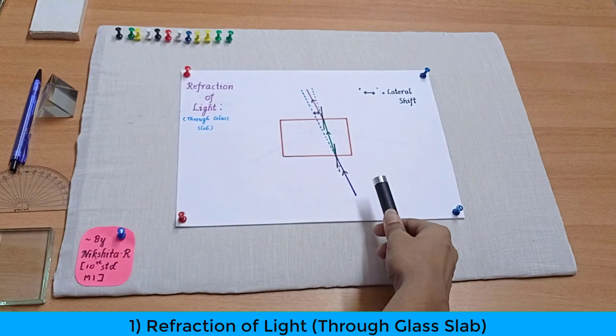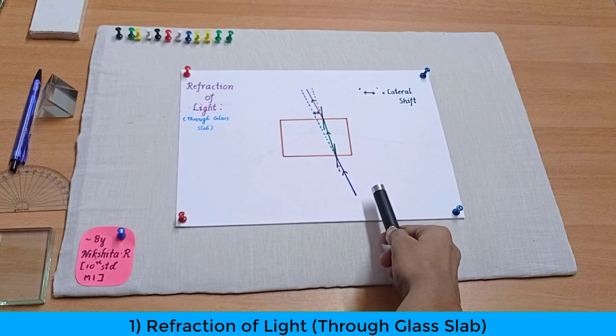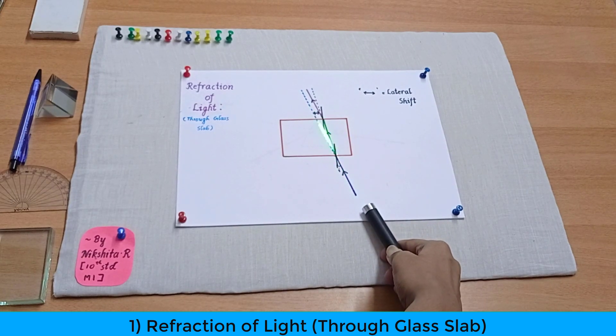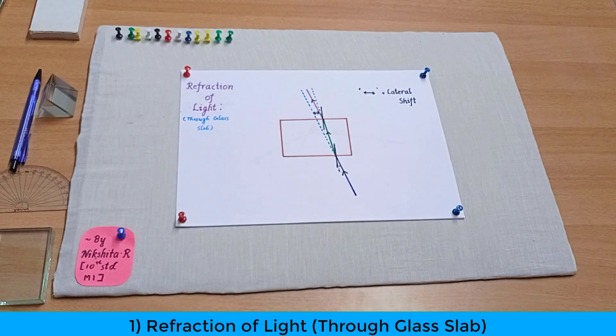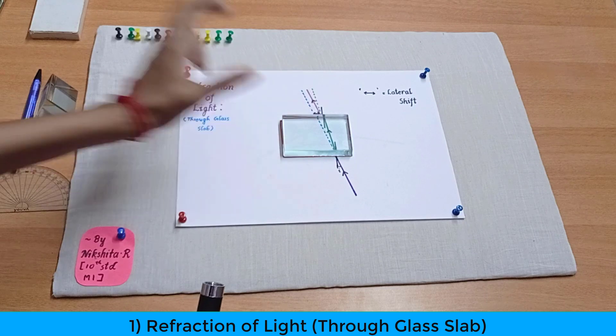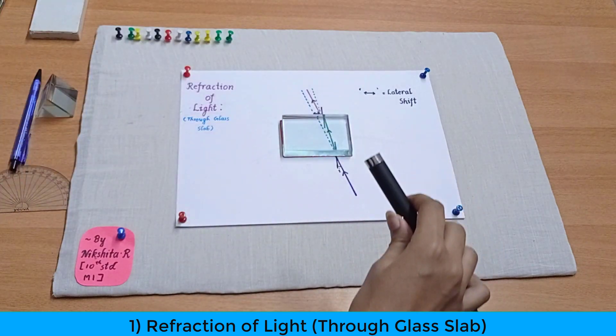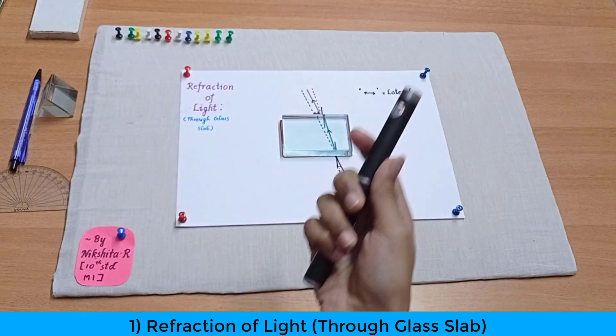So normally when we give an incident ray like this, you can see that it goes without any deviation straightly. But now what we will do is we are going to take a glass slab and place it in the middle of a paper and now just observe what is happening and I'll tell you why it's happening later.